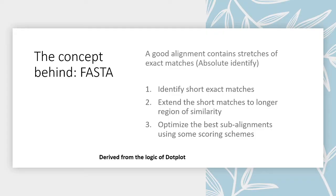Let's go into the concepts behind the FASTA algorithm. A good alignment contains stretches of exact matches — that is absolute identity. If there is a good alignment, it has a number of stretches of exact match. What FASTA does is identify short exact matches, then extend those short matches to a longer region of similarity. First it identifies the exact match — for example, from one region to another — and then after identifying that exact match, it tries to extend it to make the overall locally aligned site as long as possible with strong similarity.